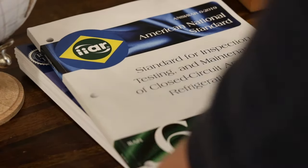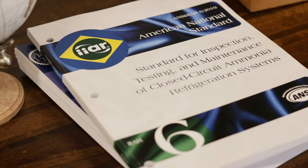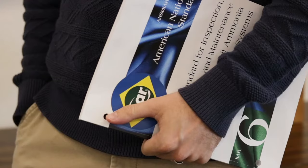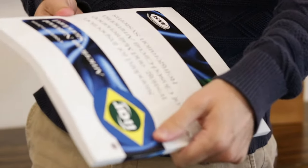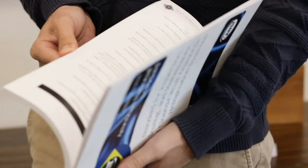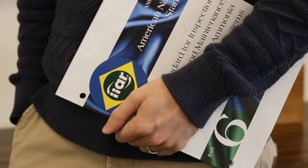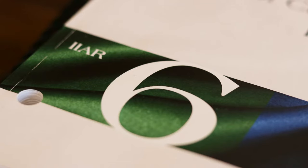The checklists contained in IIAR 6 Appendix B are derived from a legacy document named IIAR Bulletin 109. For years, the Bulletin 109 checklists, or B109s, served as the gold standard for documenting annual mechanical integrity inspections for ammonia refrigeration equipment. In 2019, IIAR retired Bulletin 109 when the first edition of Standard 6 was published. Standard 6 addresses the minimum requirements for inspection, testing, and maintenance of ammonia refrigeration systems and includes slightly altered versions of the B109s in Appendix B.